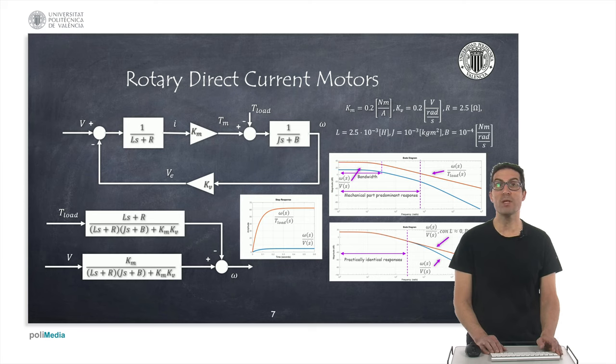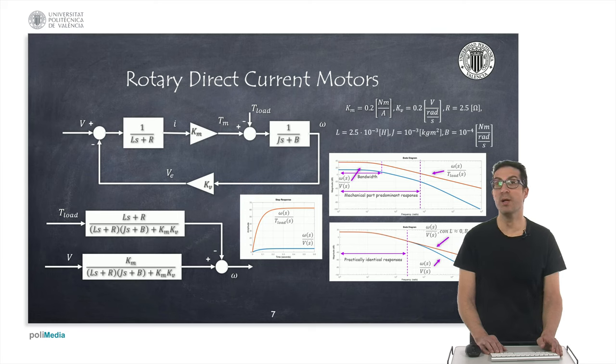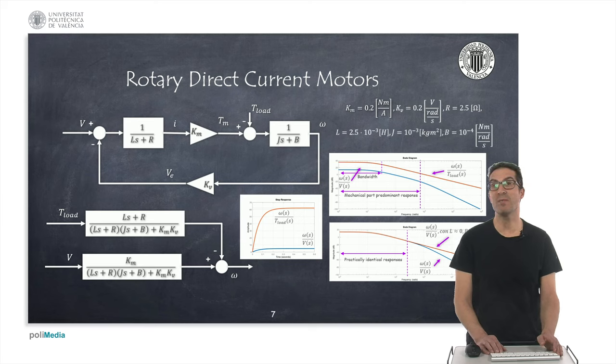For all these reasons, sometimes we ignore the electrical part thus simplifying the dynamic model of the motor to a first-order system, assuming that the inductance is very small. This friction is also often ignored as it is also very small. In fact, in the figure below, we can see how the frequency responses of the full motor model and its simplified version are practically identical up to a certain frequency.